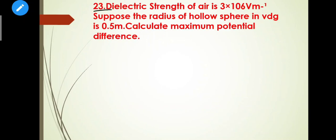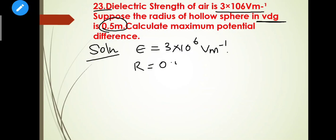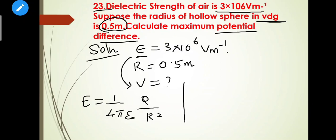Next is three mark, an important problem. Dielectric strength of air is given: E = 3×10⁶ volt per meter. Suppose the radius of Van de Graaff generator is 0.5 meter. Calculate the maximum potential difference.